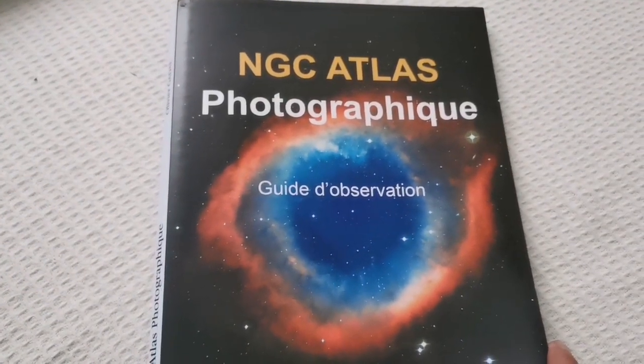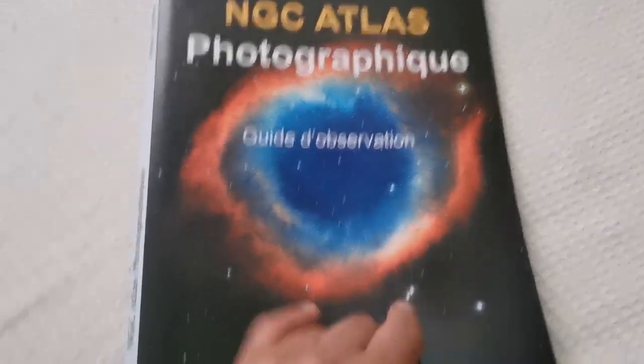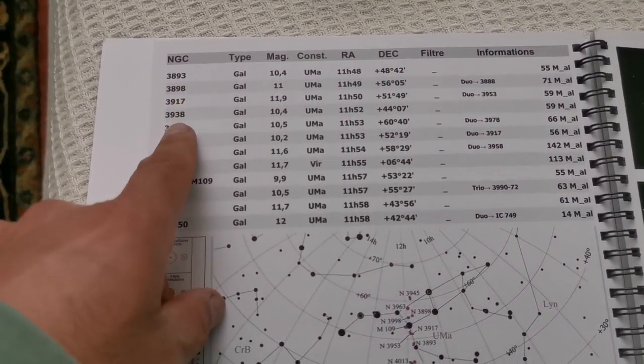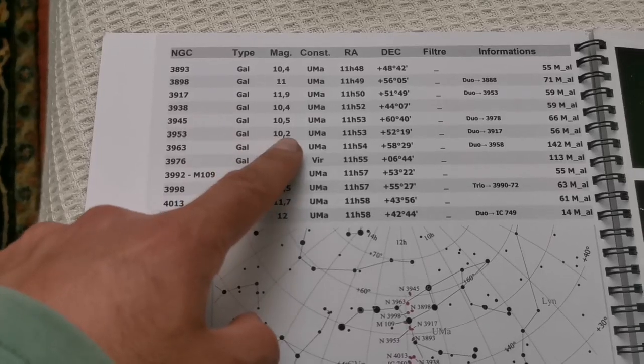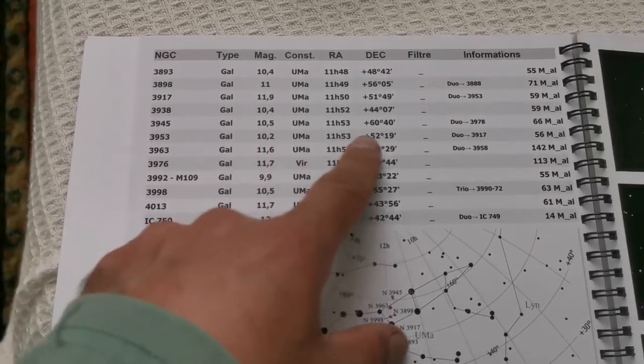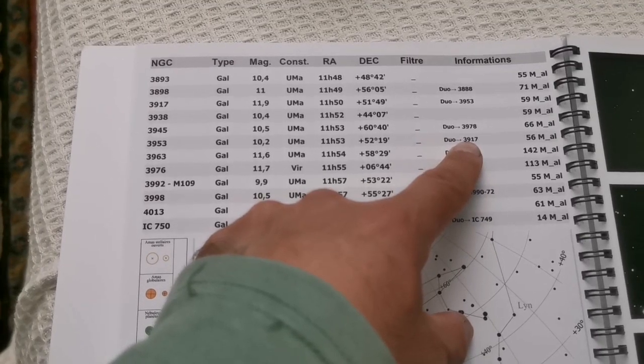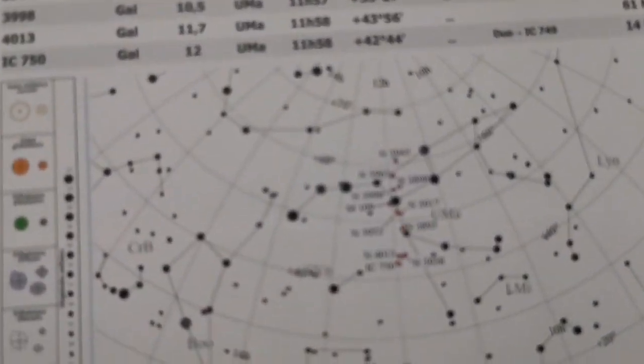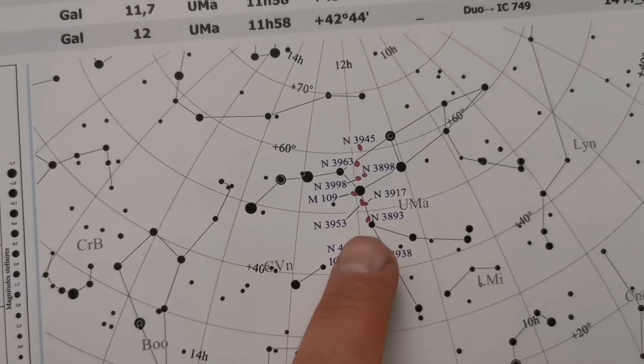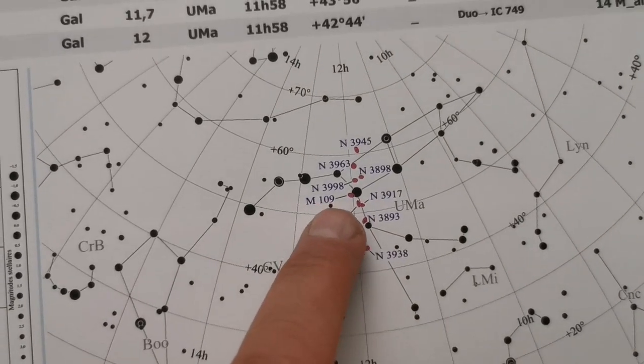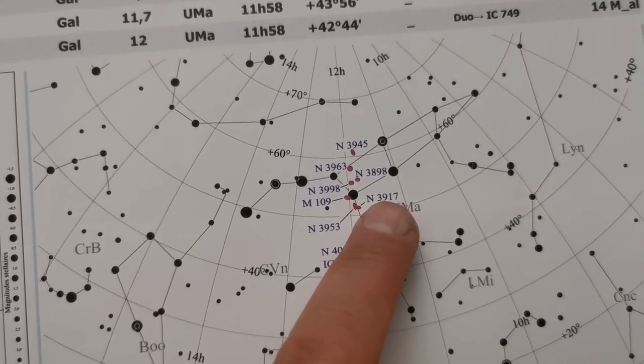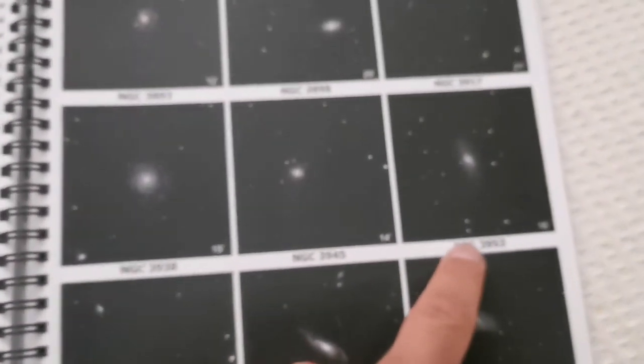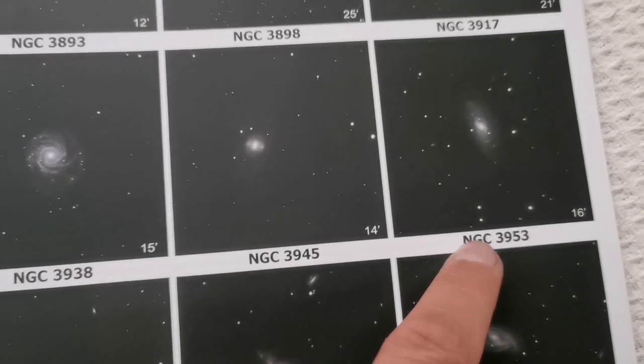However, in the NGC Atlas Photographic Guide to Observation by Olivier Godel, which is a really lovely book, you can see NGC 3953 is recorded as a galaxy of magnitude 10.2, and it makes a dual galaxy with NGC 3917. This is the chart showing NGC 3953, M109, and NGC 3917.